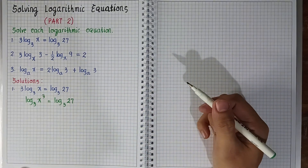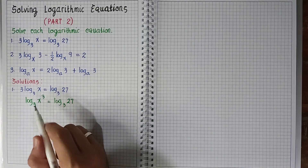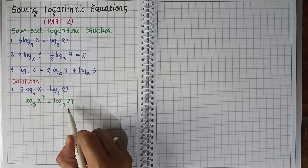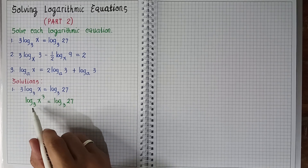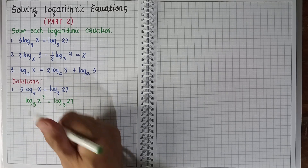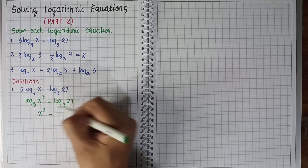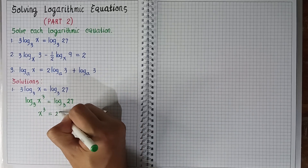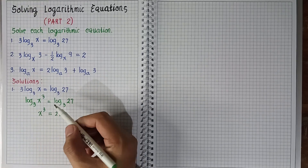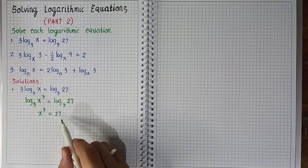So we have logarithm of x cubed to the base 3 is equal to logarithm of 27 to the base 3. Since they have the same base and the same log form, we can equate the arguments and drop off the logarithms. So we have x cubed is equal to 27.